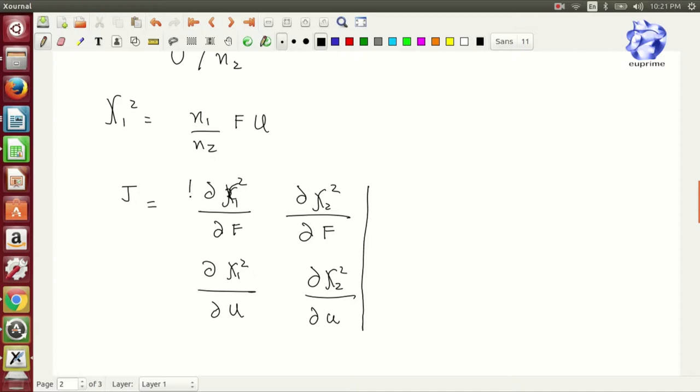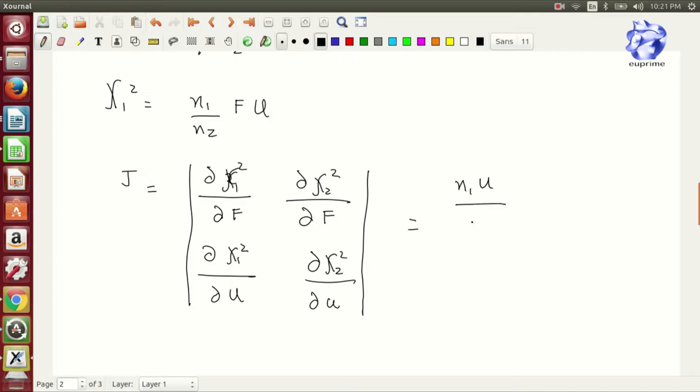These are put in a matrix and simplified as follows, where partial differentiation of x1 square with respect to F is zero, and x2 square with respect to du is 1.